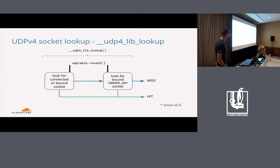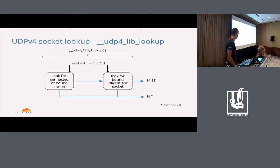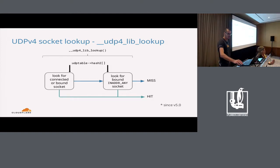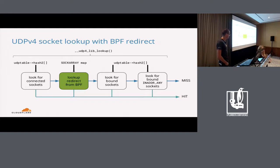What about UDP? UDP is a little bit different. In UDP, the socket lookup is split into just two phases. We don't have a table of connected UDP sockets, so we look for both connected and bound sockets at once, with connected sockets taking preference, and if we fail to do that we look for a wildcard socket. To integrate with UDP and maintain how connected sockets work, we've made changes which are a bit more intrusive — we've split the first phase into two and added a BPF program in the middle, just like for TCP.